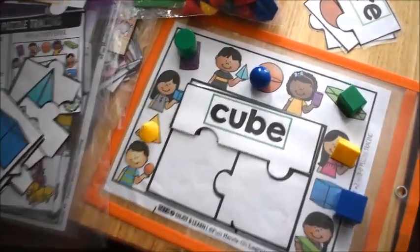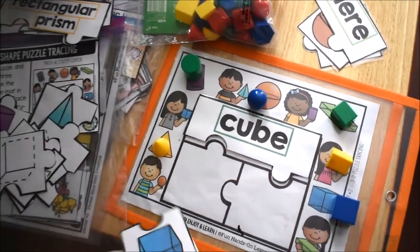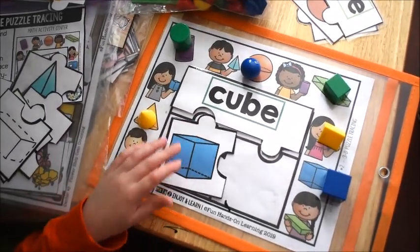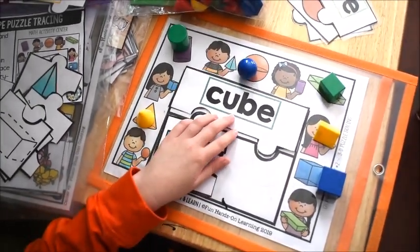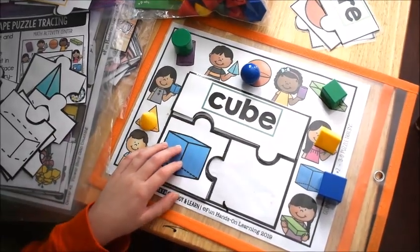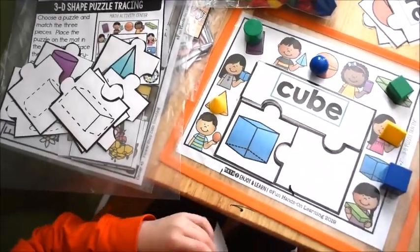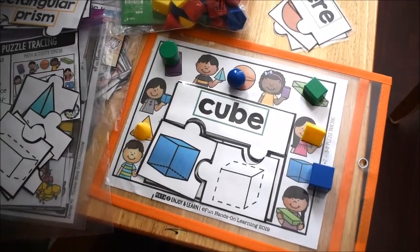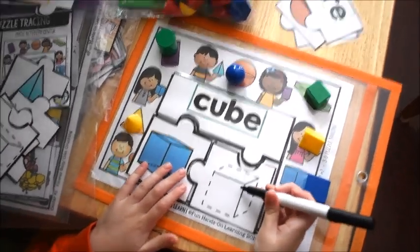Can you find the two pieces that look like a cube to match up? There you go. And then, final other piece. All right, now trace the cube.